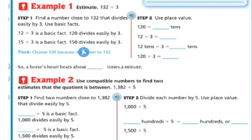So I need to think. I can choose 120 or I could choose 150. Well, I'm going to choose 120 because it's closer to 132. So my basic fact that I'm going to use is 12 divided by 3 or 120 divided by 3.